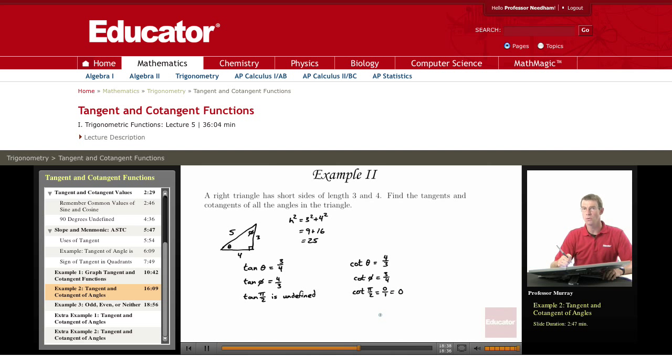So the secret to working out tangents and cotangents of angles in right triangles is just to remember the SOH CAH TOA formula. In particular, the TOA part says tangent equals opposite over adjacent, so that quickly helps you figure out the tangents of angles in right triangles.